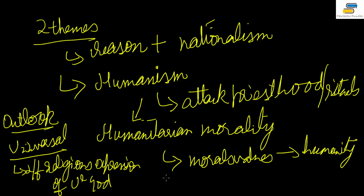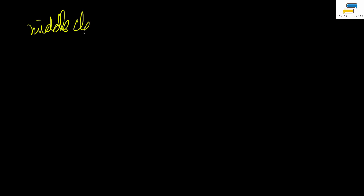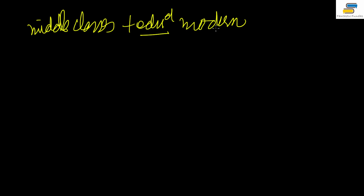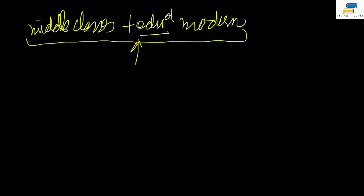All these religious reform movements appealed most to the rising middle classes. Their appeal was largely to the middle classes and to educated people, especially the modern educated people. These were intellectuals, and it was to this set of people that the ideas of social reforms appealed the most.